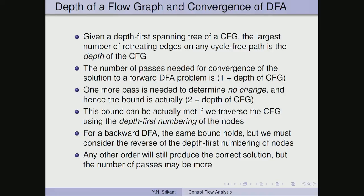Once we know the depth of the control flow graph, we know the number of iterations needed for convergence. This bound is achieved when we traverse the control flow graph using depth-first numbering of the nodes; any other order may take more iterations. One more pass is needed to determine no change, so the bound becomes 2 plus the depth of the CFG. For backward data flow analysis, the same bound holds but we traverse nodes in reverse depth-first order. Any other order still gives a correct solution but may require more passes.